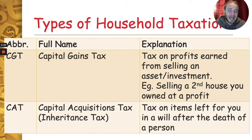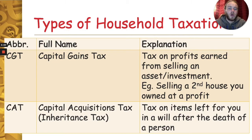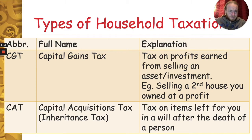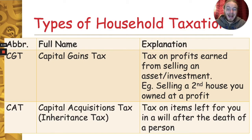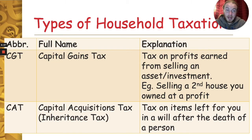Capital gains tax is a tax on profits earned from selling an asset or an investment. For example, if you sold a second property you owned, the profit you made from selling it versus what you bought it for is subject to capital gains tax. Capital acquisitions tax — also known in the old-fashioned sense as inheritance tax — is basically taxing the items left to you in the will of someone after they pass away.